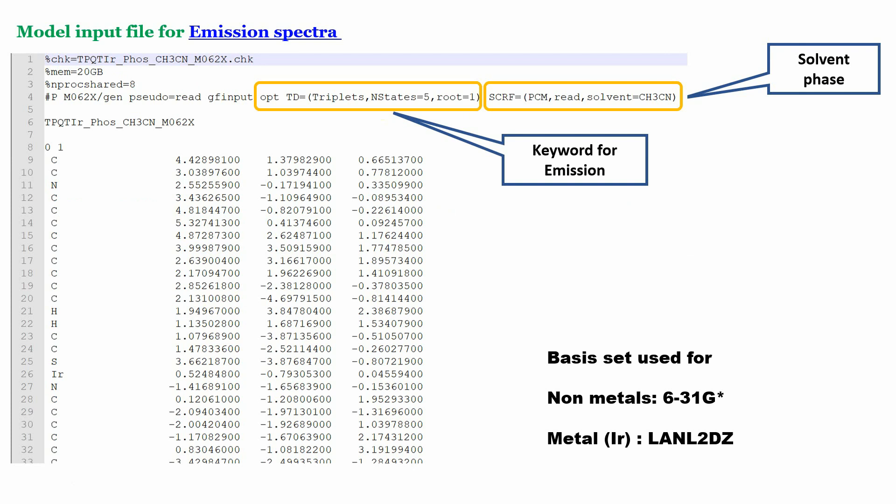This is the model input file for emission spectra. This is the functional used here. The keyword for emission spectra should include OPT, TD, triplet, NSTATES=5, and ROOT=1.